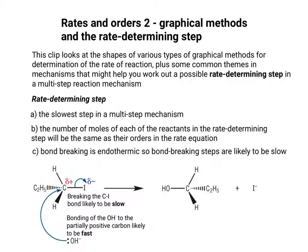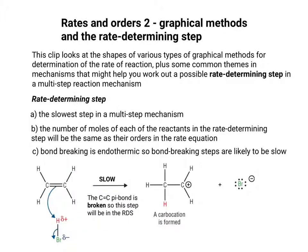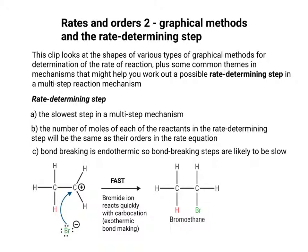An important thing to remember is that bond-breaking is endothermic. So bond-breaking steps, such as breaking the carbon-iodine bond in a nucleophilic substitution mechanism, are likely to be slow and found in the rate-determining step. The bonding of the OH⁻ to the partially positive carbon is likely to be fast. In electrophilic addition, for example, the carbon-carbon pi bond in the C=C double bond is broken — this step needs energy, it's endothermic, so it's going to be slower and will be in the rate-determining step. In the next stage, the bromide ion reacts quickly with the carbocation; this is exothermic bond-making, so it's a fast step and will not be in the rate-determining step.